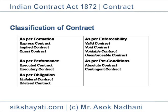As per Performance. As per extent of execution, a contract may be classified as Executed Contract — executed completely by both parties — or Executory Contract — where some party has still to perform their obligation.